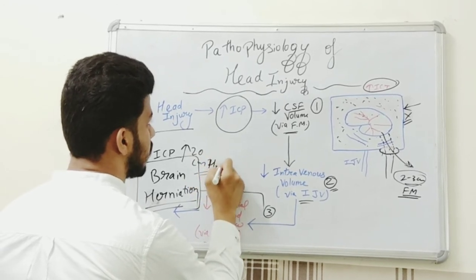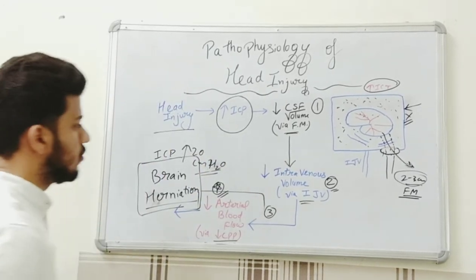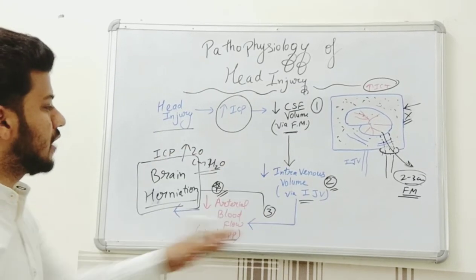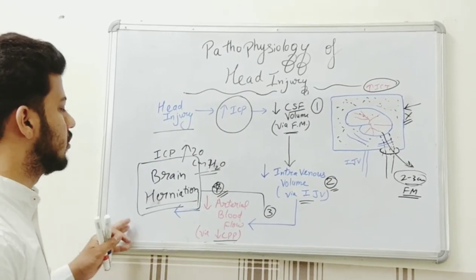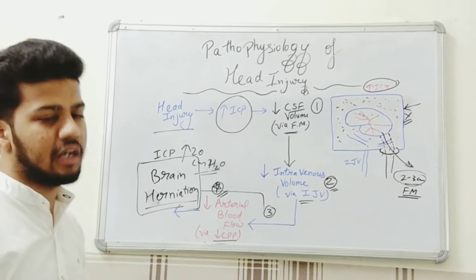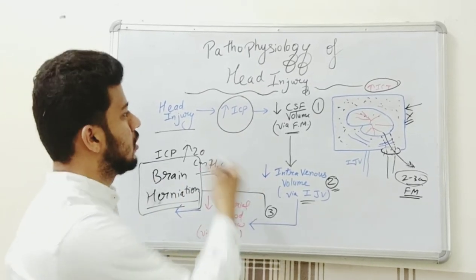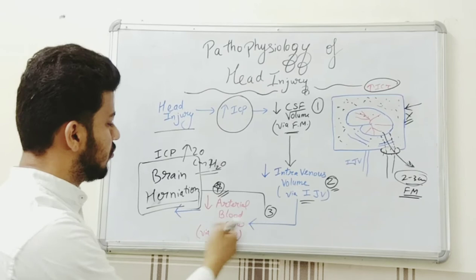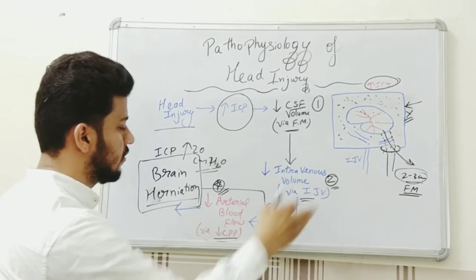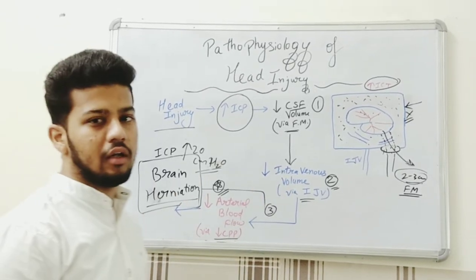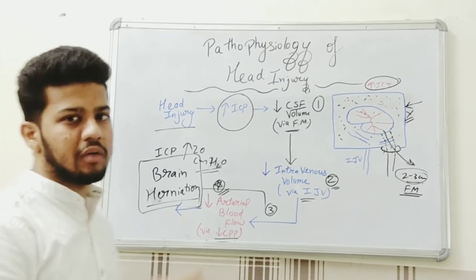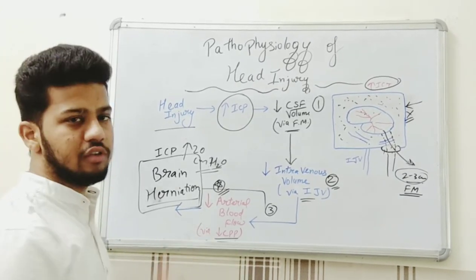All these compensatory factors and this cycle occur in order to maintain constant pressure inside the cranial cavity. However, by decreasing other components and deforming the brain, this process itself causes dangerous injury. So now let's learn some clinical points about head injury.